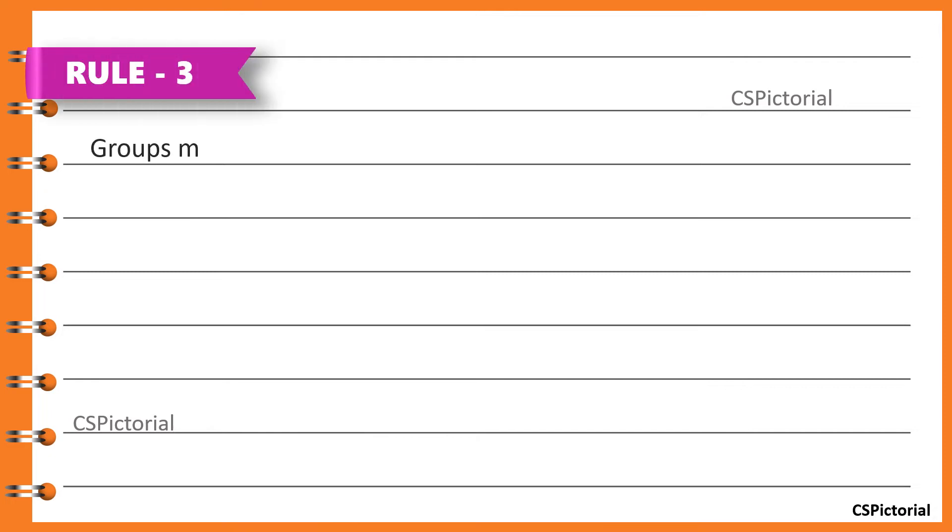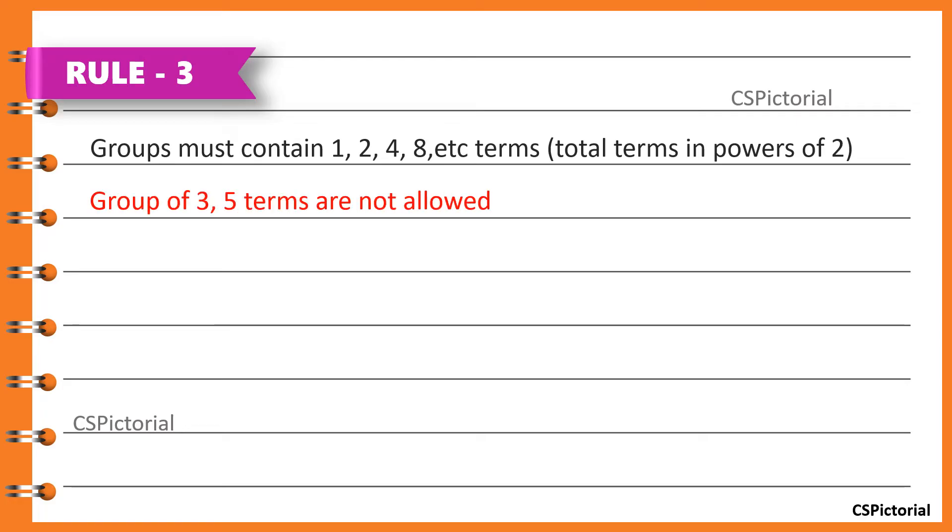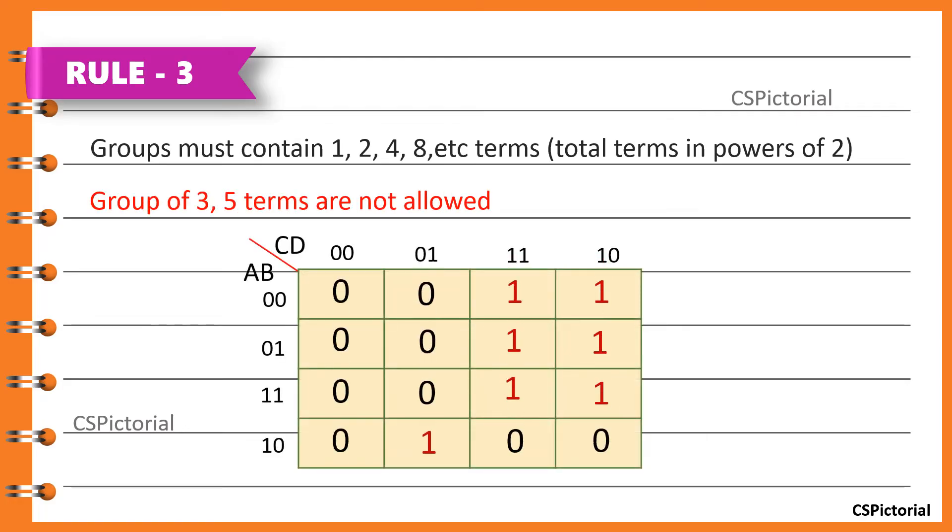Groups must contain 1, 2, 4, 8, etc. terms. That is, the total terms of the group must be in powers of 2 like 2, 4, 8, etc. Groups made up of 3, 5, 7 terms are all not allowed.